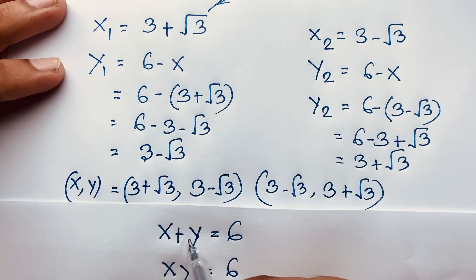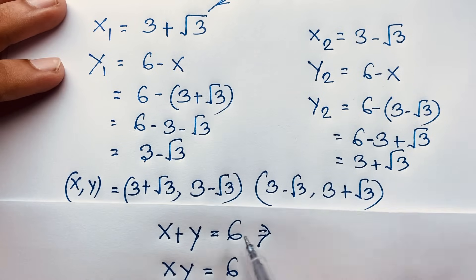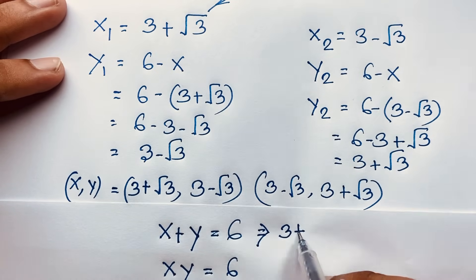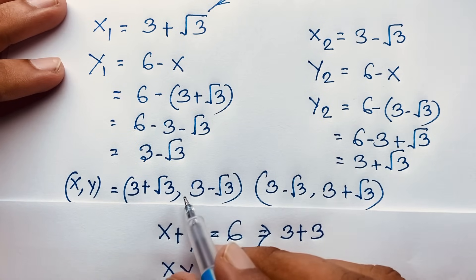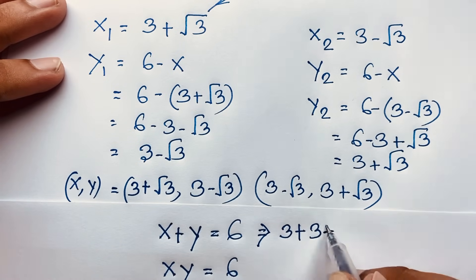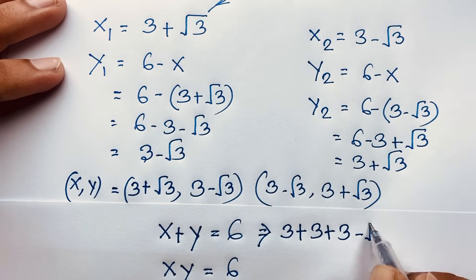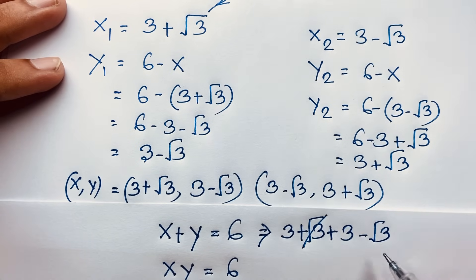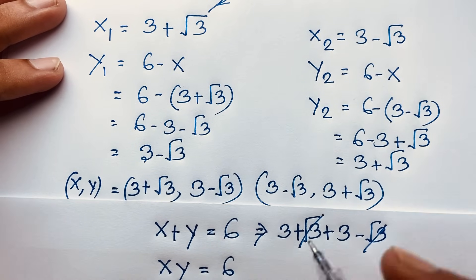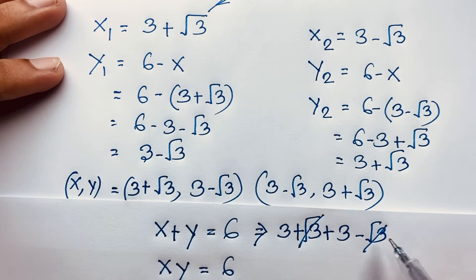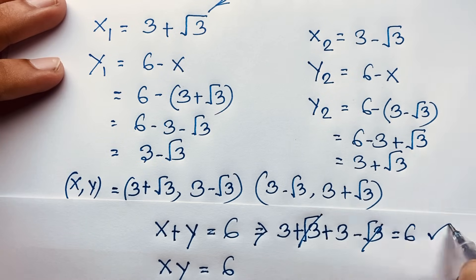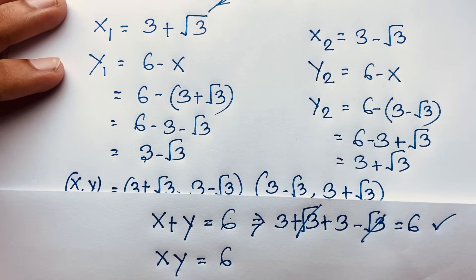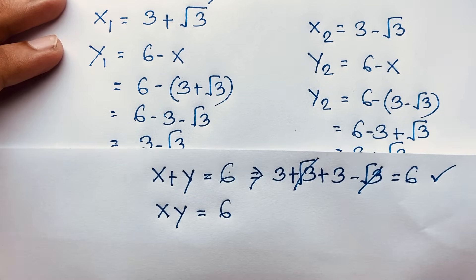First of all, let's verify: x plus y equals (3 plus square root 3) plus (3 minus square root 3). The square root 3 terms cancel out, and you can see 3 plus 3 equals 6. So left-hand side and right-hand side are both equal, confirming x plus y is equal to 6.